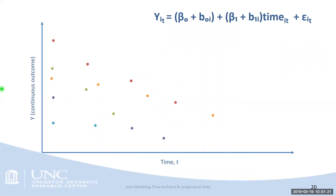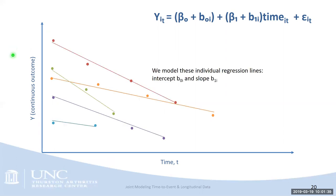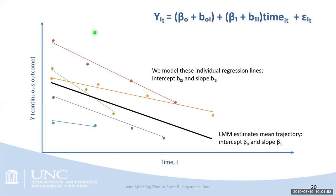Graphically, with time on the x-axis and continuous outcome on the y-axis, each colored dot represents one specific person measured at multiple time points. In the linear mixed model we model these individual regression lines so each person has an intercept b0i and a slope b1 associated with their trajectory. The LMM then estimates the mean trajectory given by beta0 for intercept and beta1 for slope.